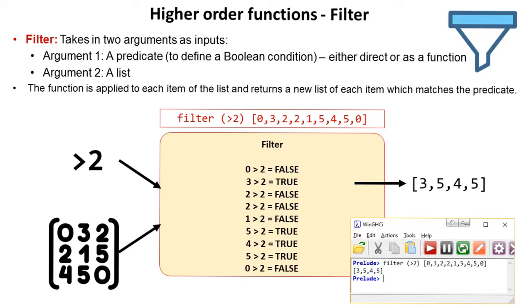Filter takes in two arguments as input as well. It takes in a predicate which basically is to define a boolean condition. And you can either write this directly or as a function. We'll look at both. And again it takes a list. The function or the predicate is then applied to each item of the list and the list that gets checked out at the end is only the elements that match.